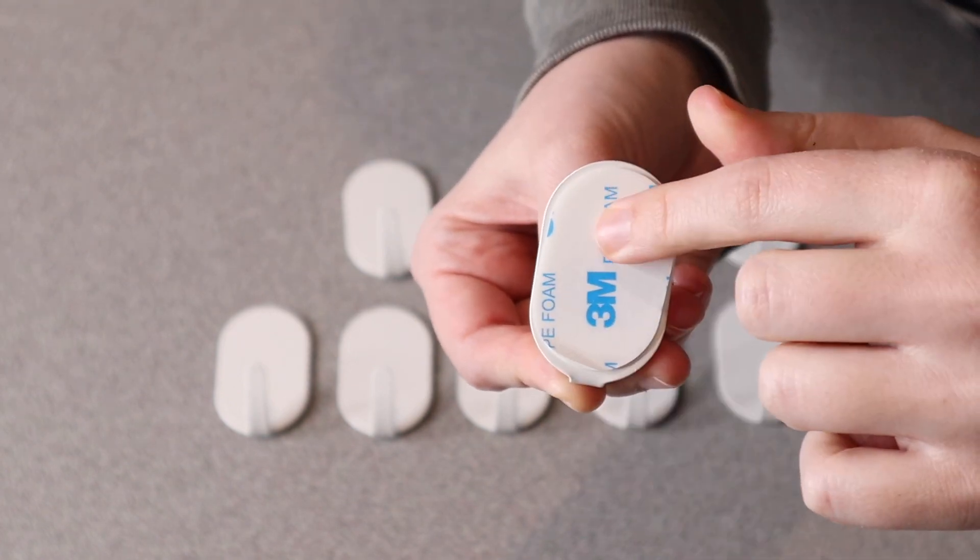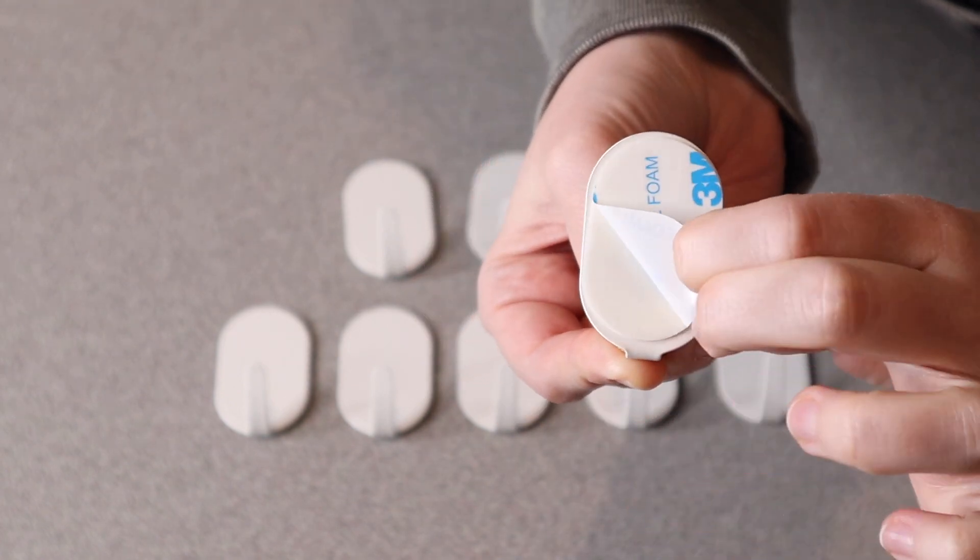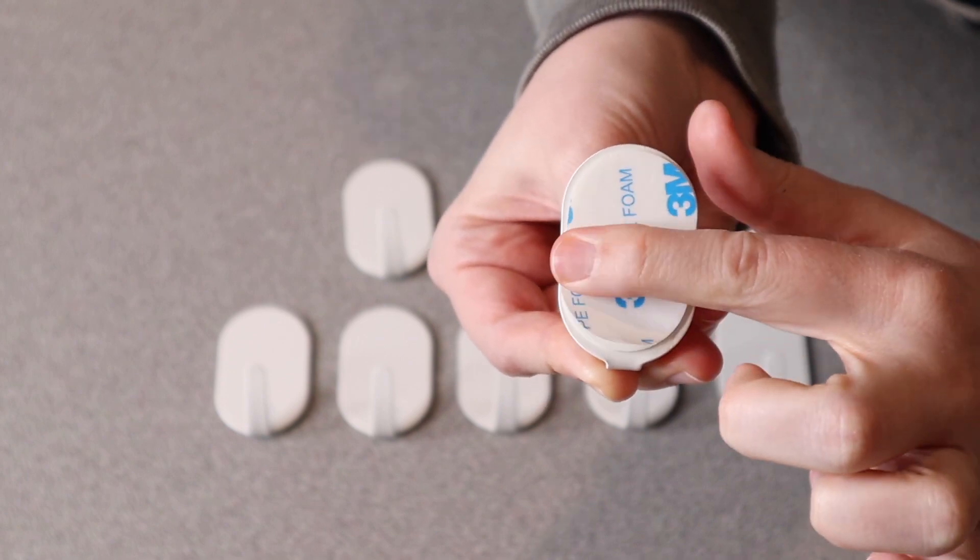All you need to do to secure these onto the wall is to just peel back this area and push down on that sticky spot.